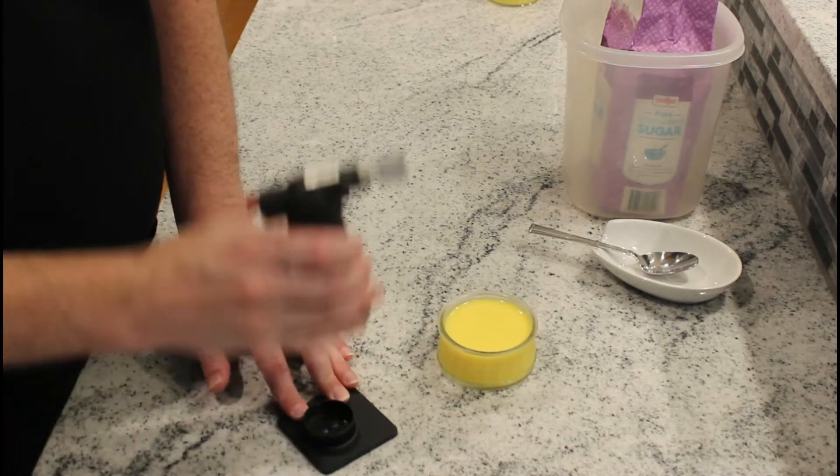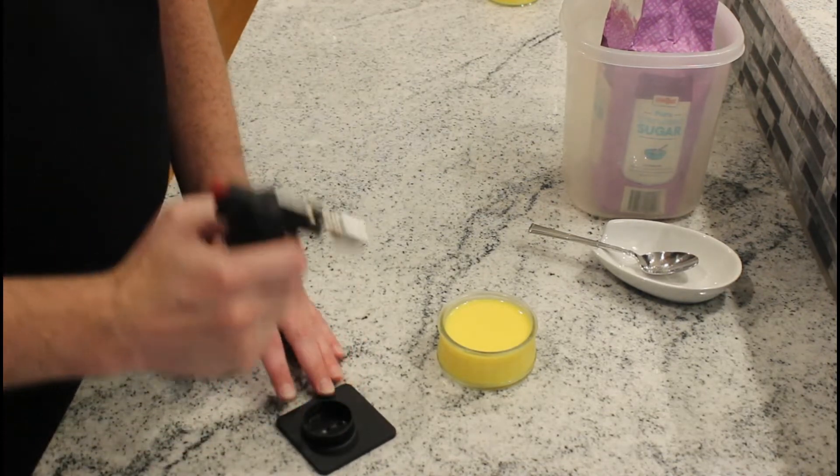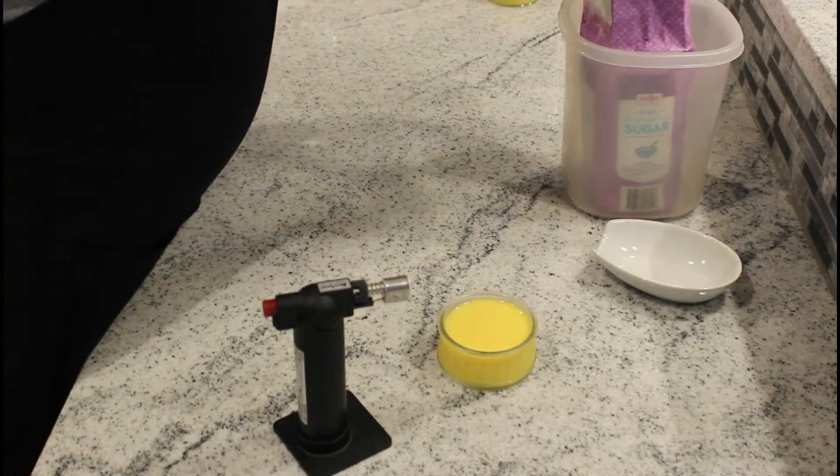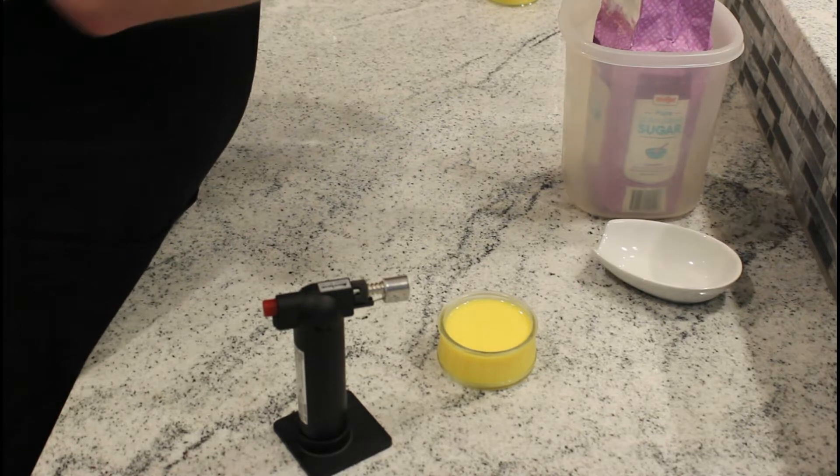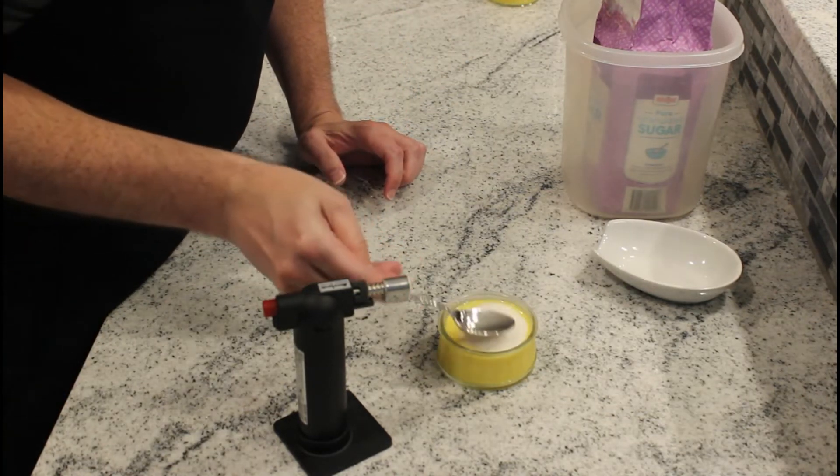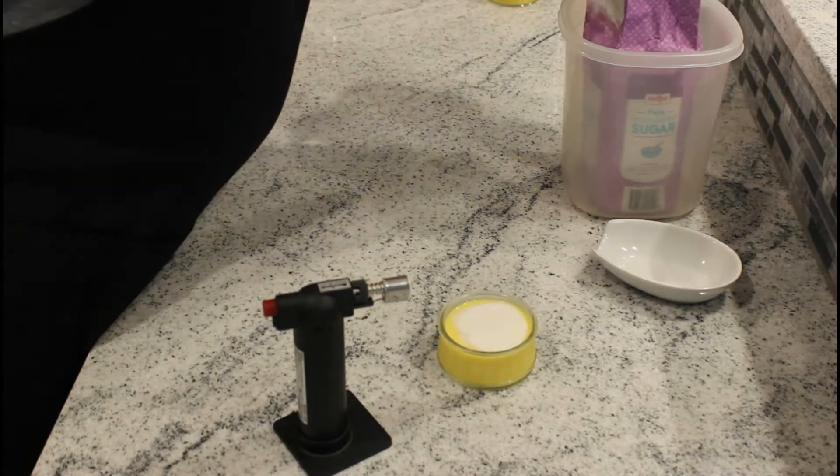But the best part is the blowtorch. We're gonna put some sugar on top of this and we are going to caramelize the top just like a crème brûlée you would get out at a restaurant, and it has that nice cracking sound to it and really tasty caramelized.